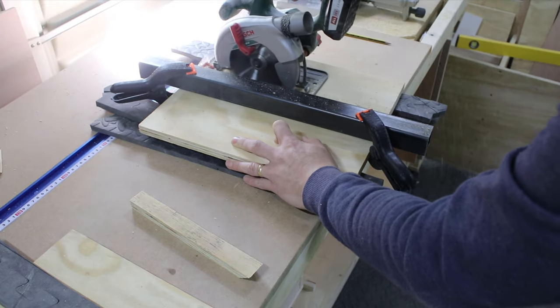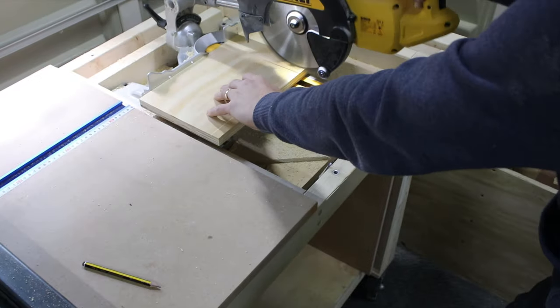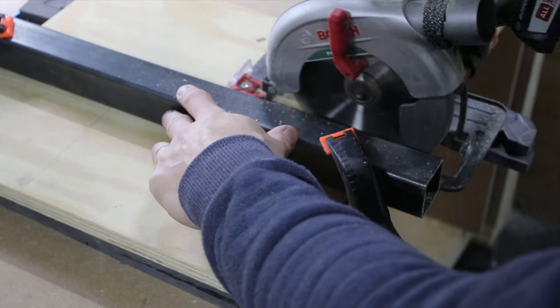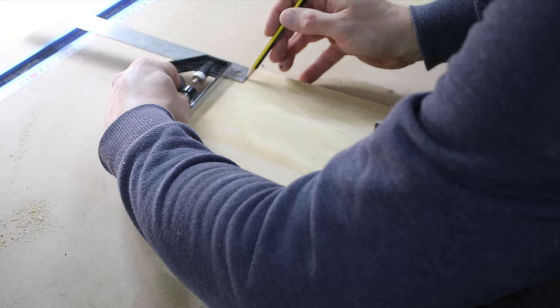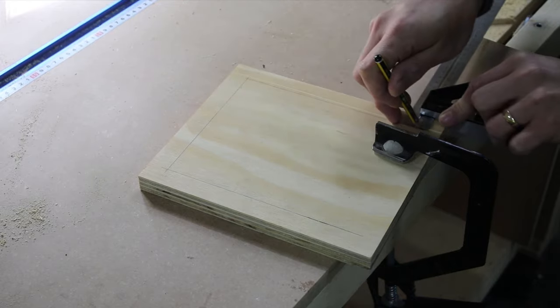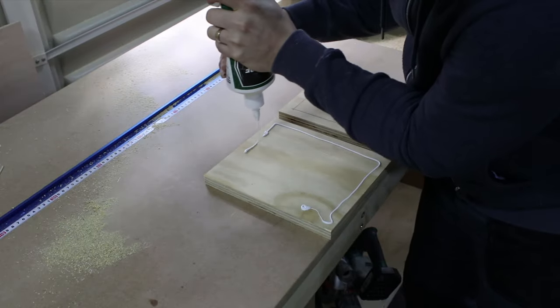For my second project I was going for a more minimalist, modern look. I cut two identical pieces of plywood and marked the area that I will cut out later on. Then I glued them together.